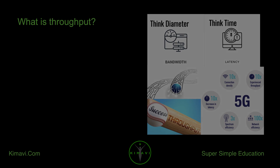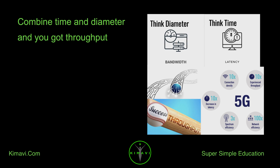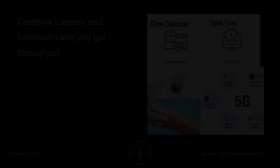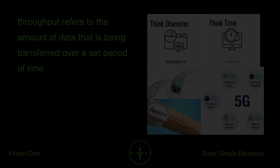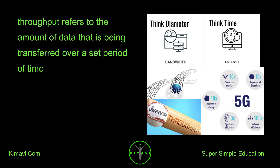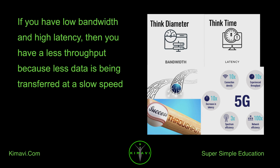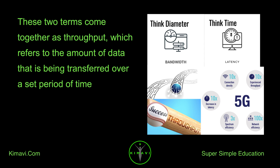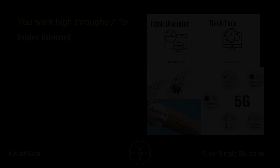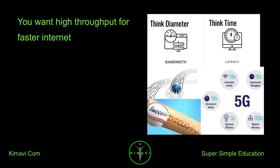What is throughput? Combine time and diameter, and you get throughput. Combine latency and bandwidth, and you get throughput. Throughput refers to the amount of data that is being transferred over a set period of time. If you have low bandwidth and high latency, then you have less throughput because less data is being transferred at a slow speed. You want high throughput for faster internet.